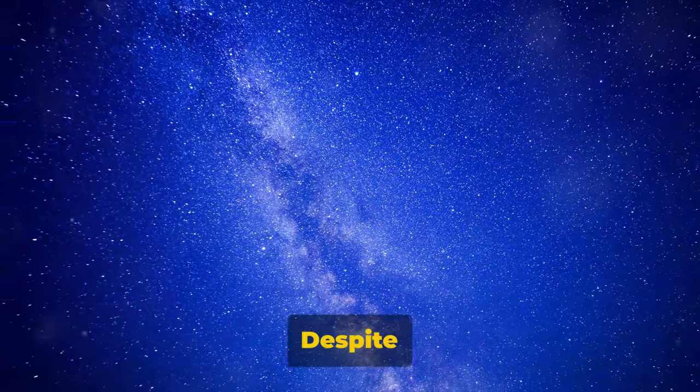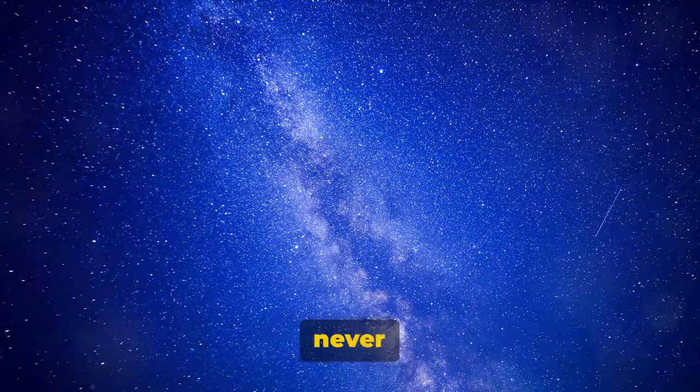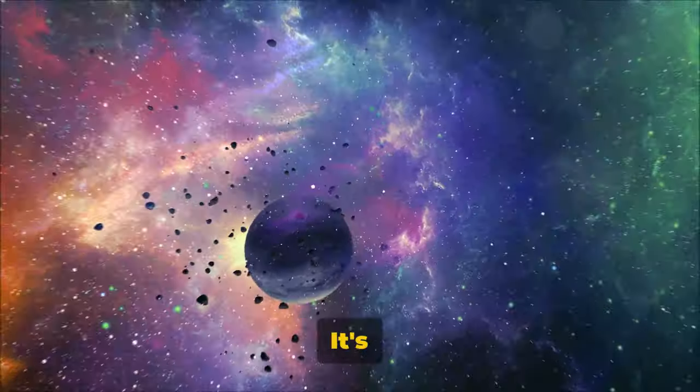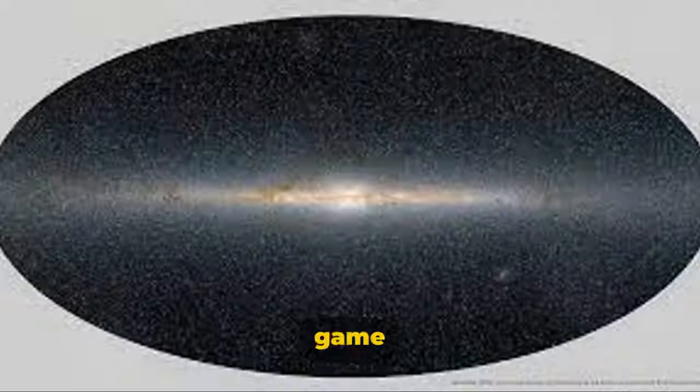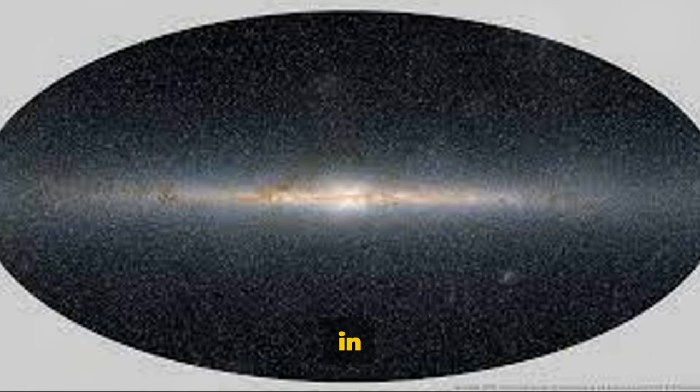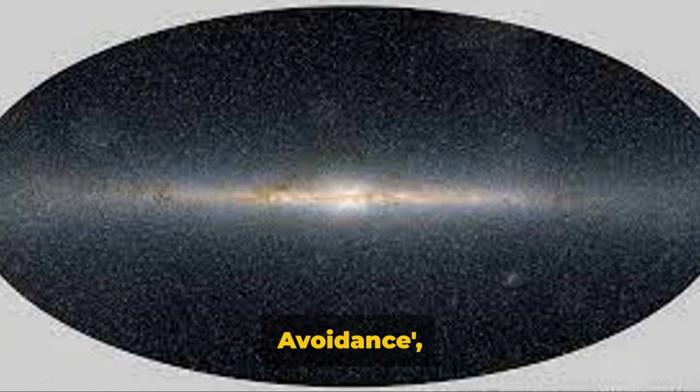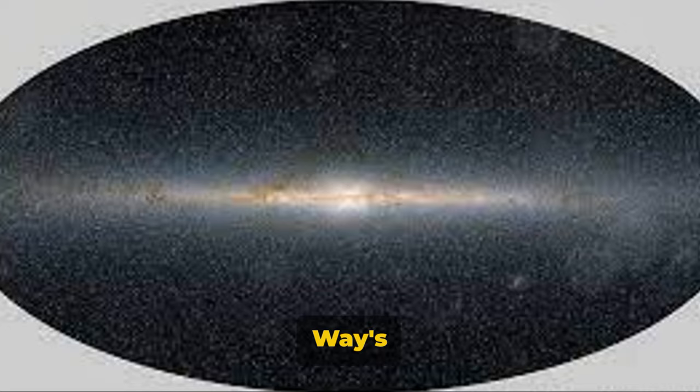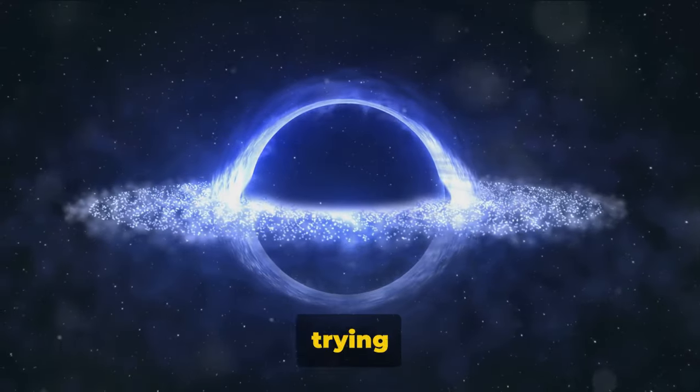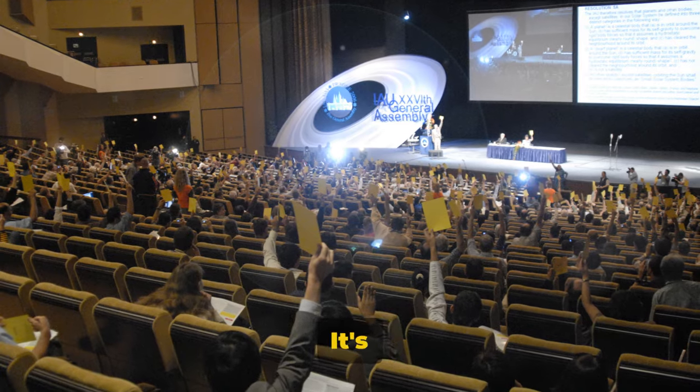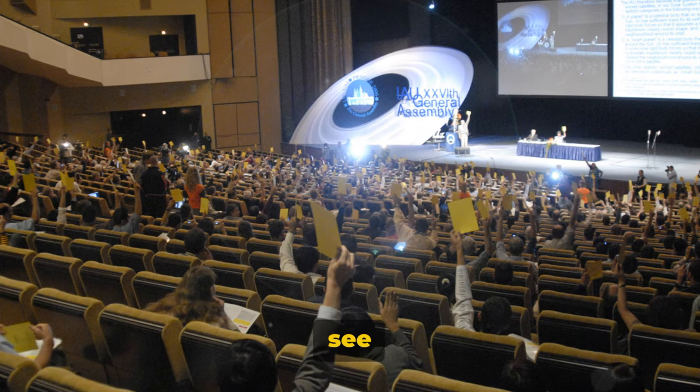But here's the catch. Despite being this colossal entity, we've never actually seen the great attractor. It's like the universe's own cosmic game of hide-and-seek. It's tucked away in what astronomers call the zone of avoidance, a region of space obscured by the Milky Way's dust and starlight. It's like trying to peer through a dense fog. It's there, it's massive, but we just can't see it directly.